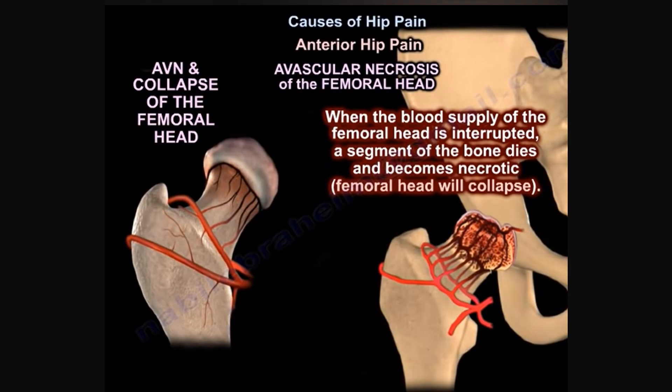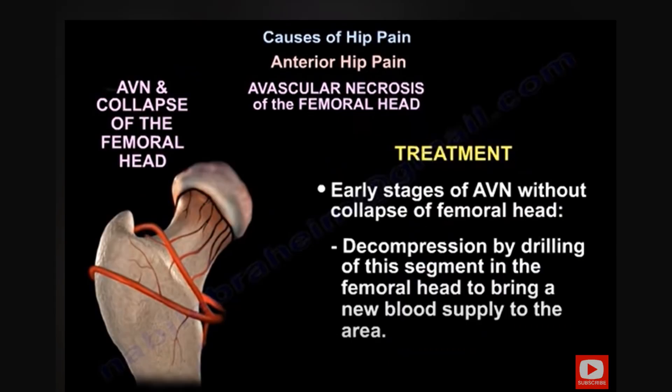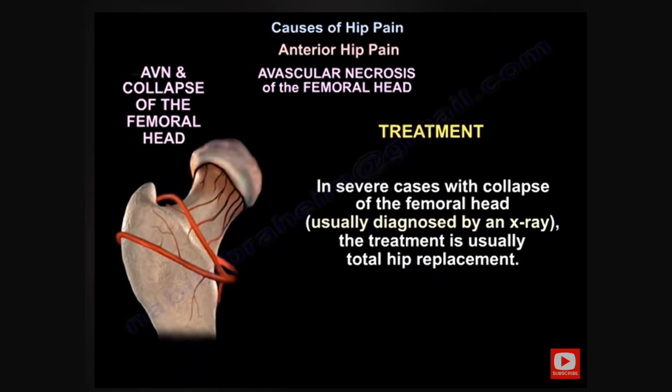The treatment of a stress fracture is usually surgical fixation utilizing lag screws. Femoral head replacement is done in rare late cases. Avascular necrosis of the femoral head will also give anterior hip pain or deep groin pain. When the blood supply of the femoral head is interrupted, a segment of bone dies and becomes necrotic, and the femoral head will collapse. In early stages of AVN without collapse, treatment is decompression by drilling the dead segment of bone to bring new blood supply. In severe cases with collapse, treatment is total hip replacement.